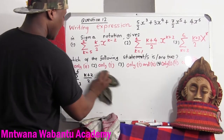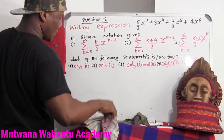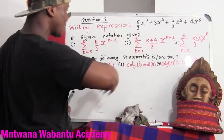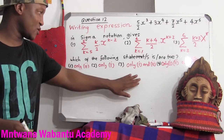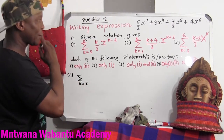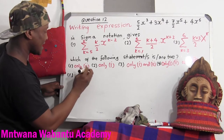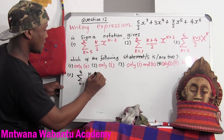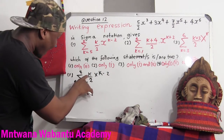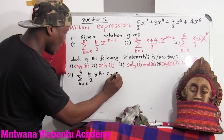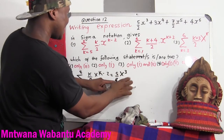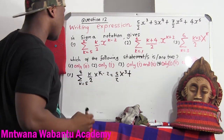Let me start with the first option from the beginning — I think that's the standard way. For the first option, we have a sum: k equals 5, going up to k equals 8 as the last term, and the expression is k over 2 times x to the power (k minus 2). When k equals 5, substituting gives 5 over 2 times x to the power of 5 minus 2, which equals x to the power of 3. And we plus because sigma means sum.